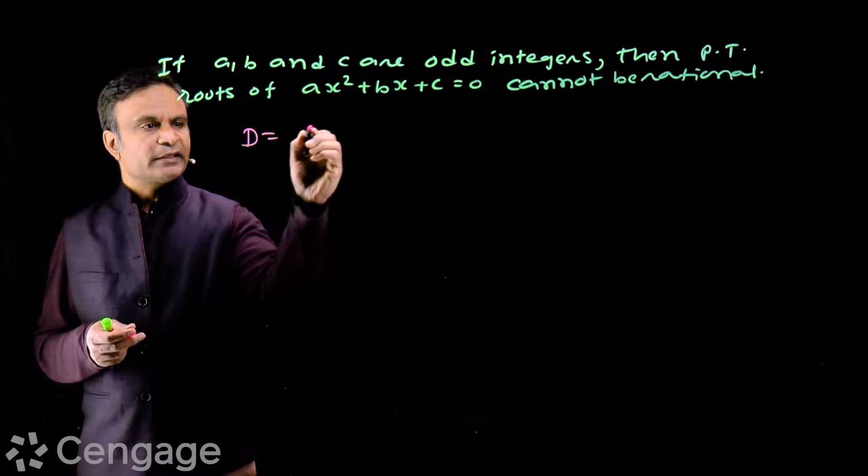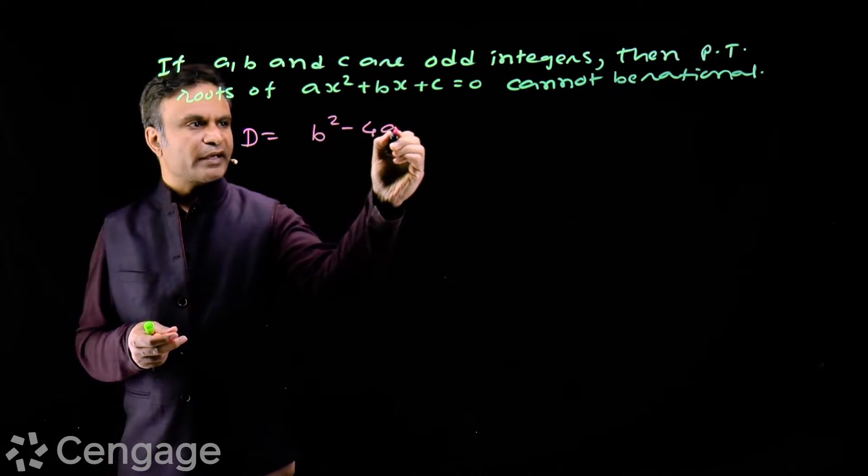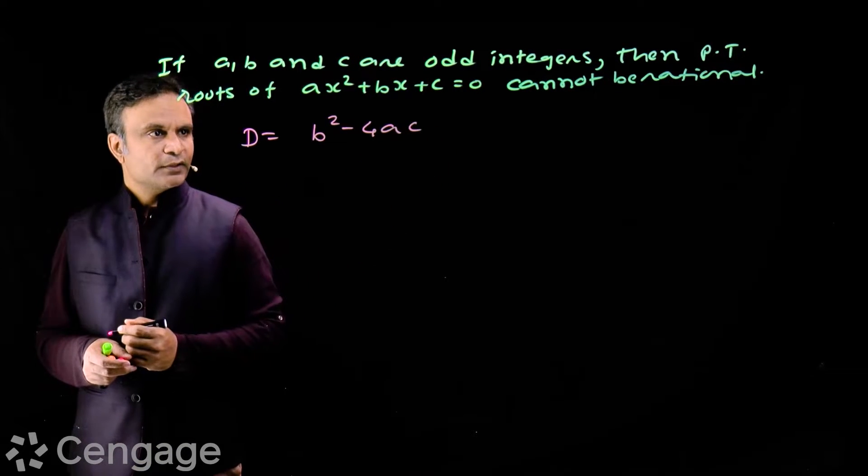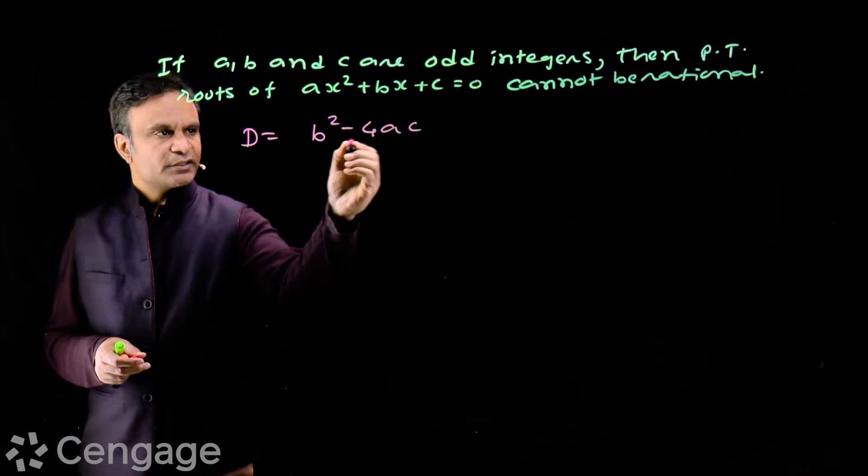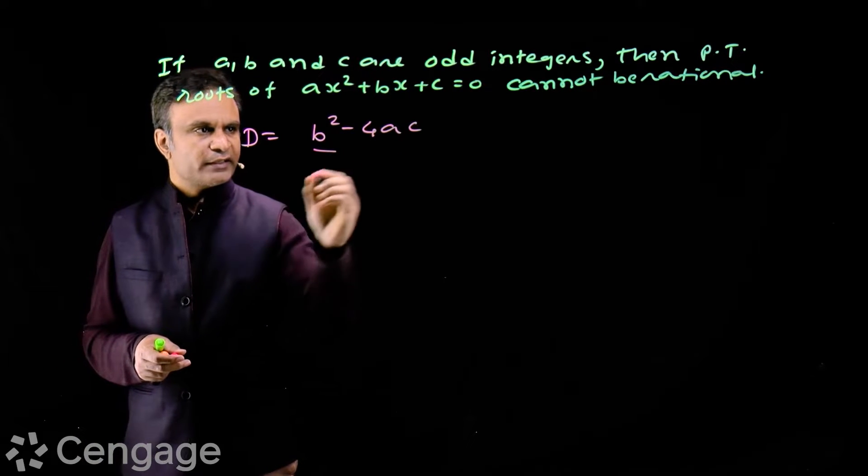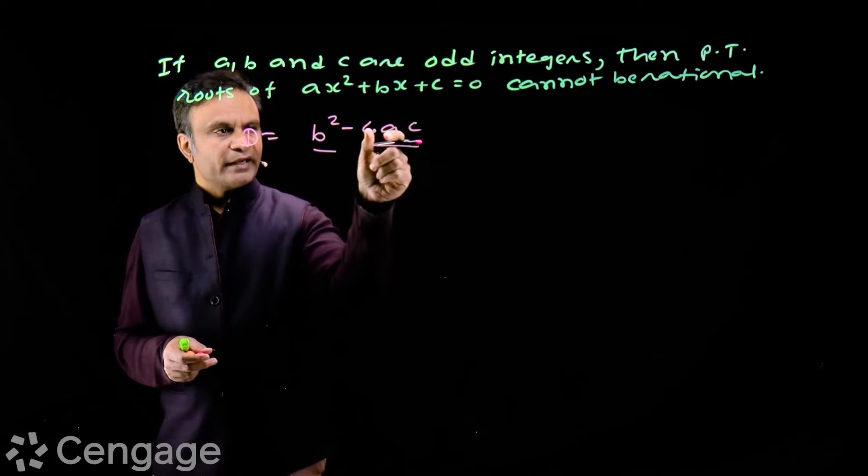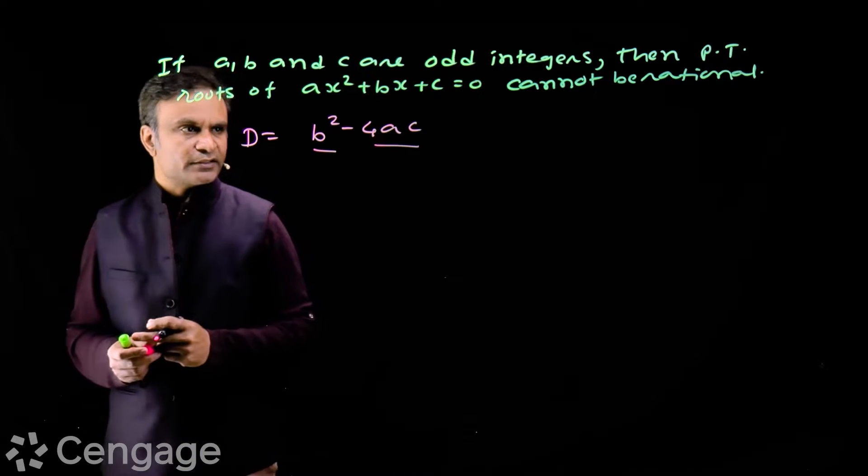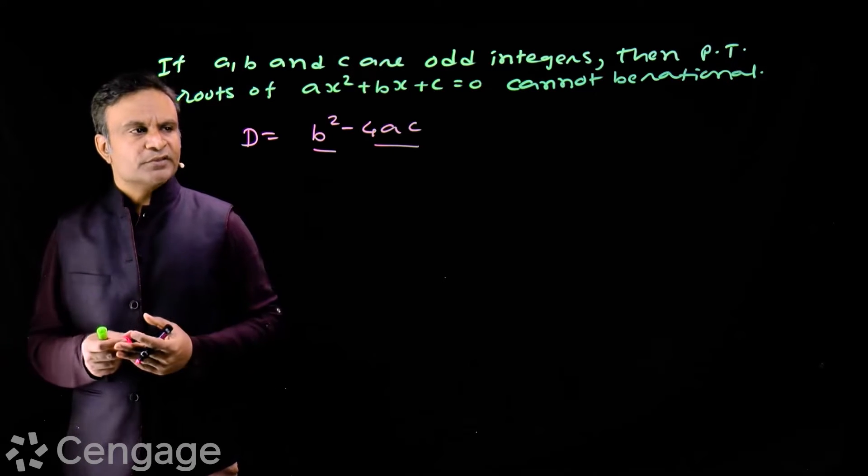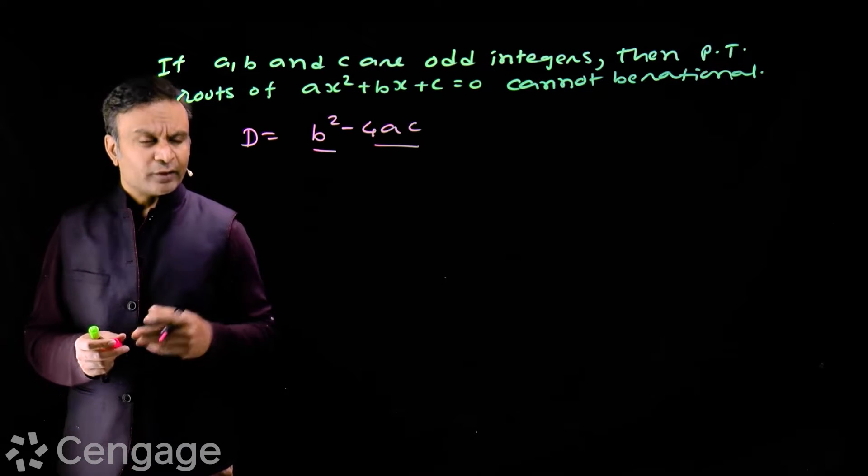We start with discriminant D, which is b² minus 4ac. Here b is an odd integer, so b² is an odd integer. 4ac will be even integer, and odd minus even is odd integer.